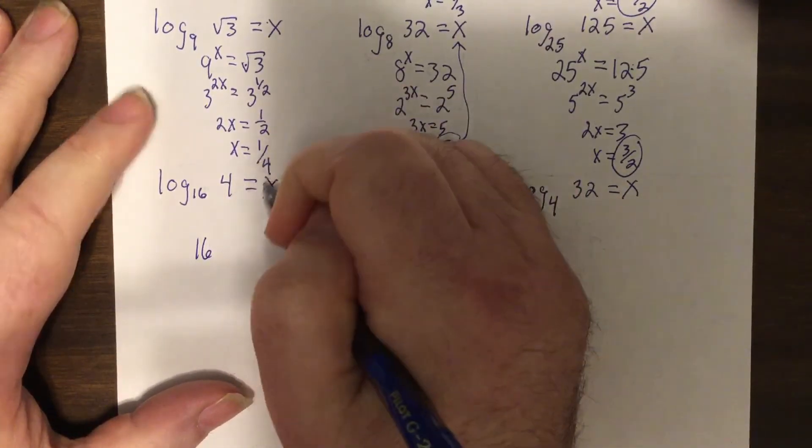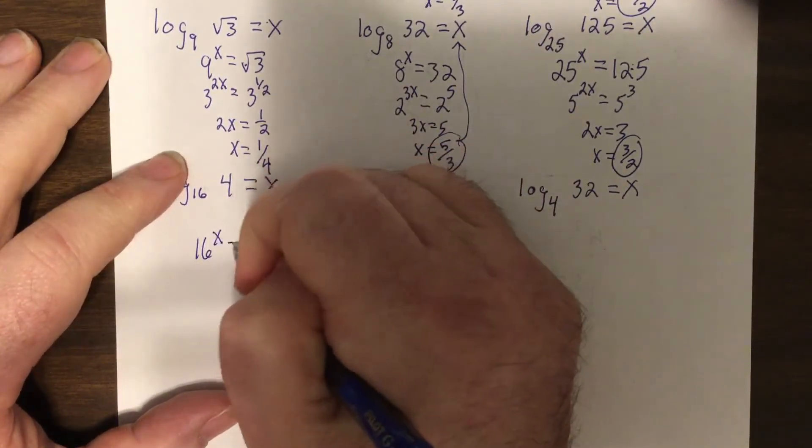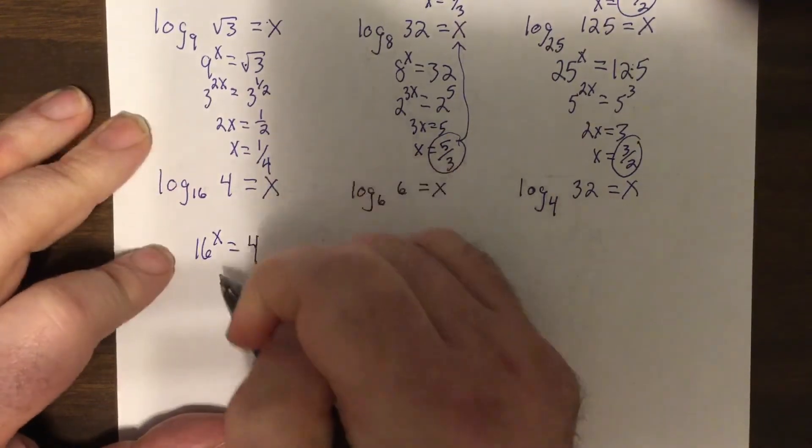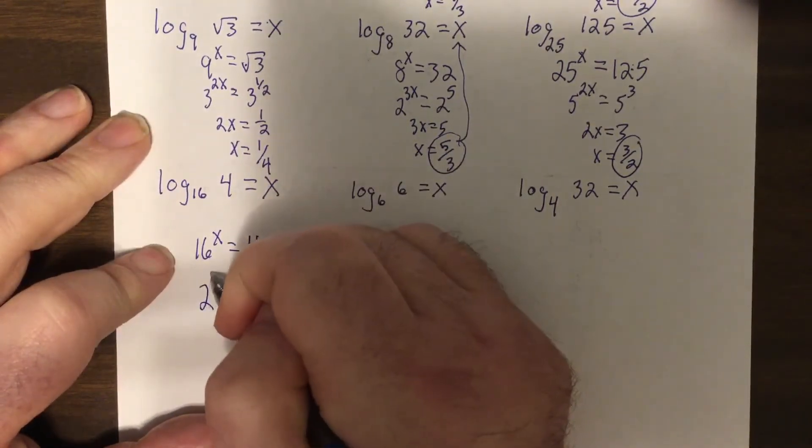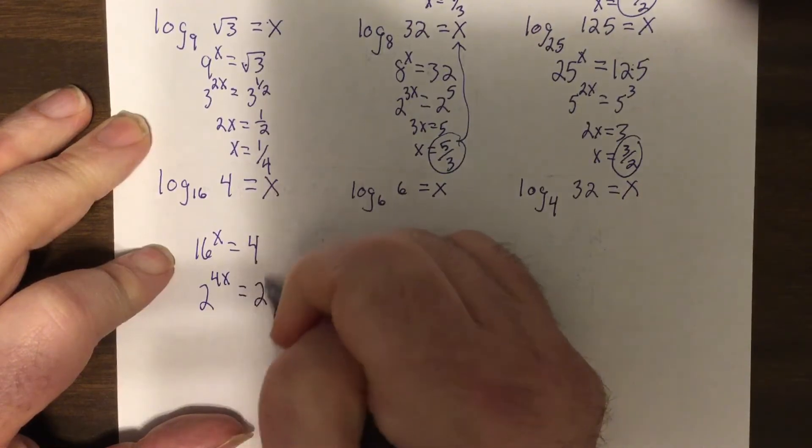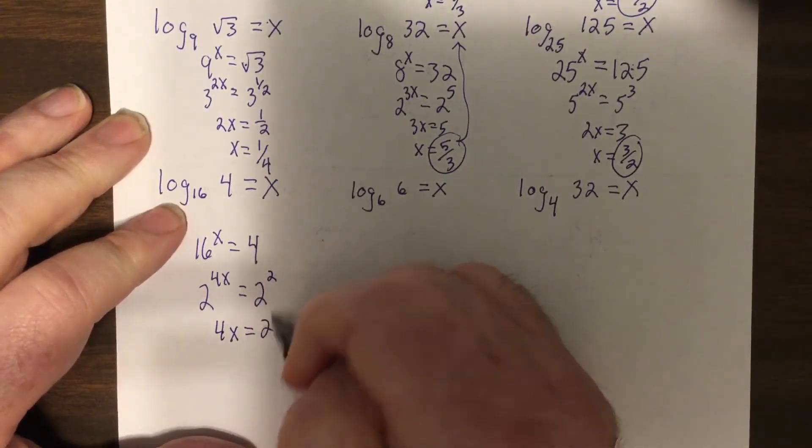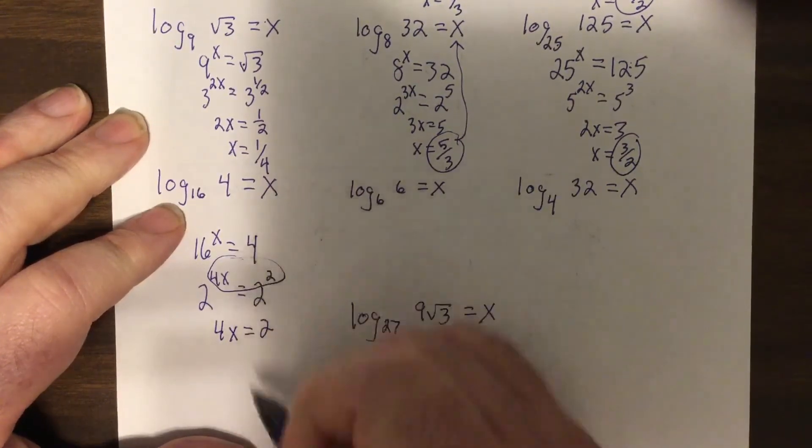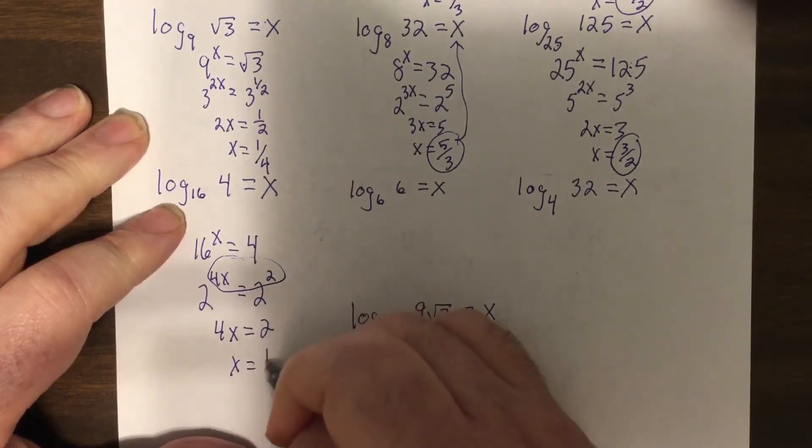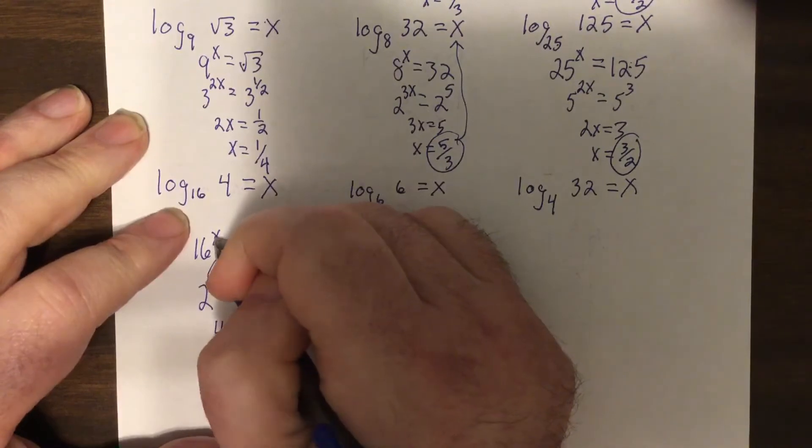So again, this would be 2 to the 4x equals 2 squared, 4x equals 2, so x equals a half. Or square root, square root of 16 is 4, yes.